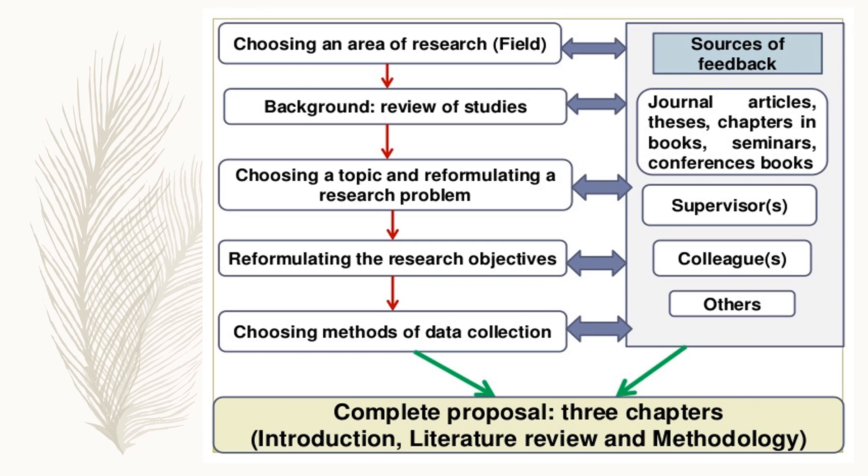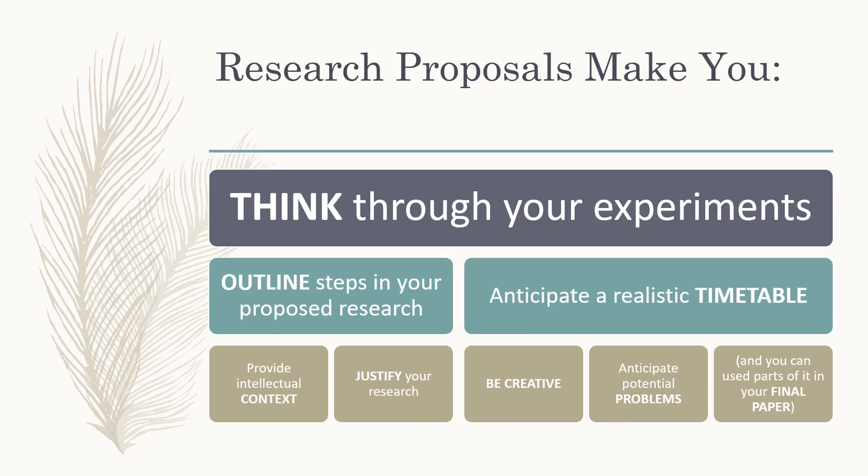Once you have chosen your topic or formulated your research problem, you can start reformulating the research objectives. Once you have listed all the objectives, you can choose the method of data collection. A research proposal makes you think through your experiment. It also helps you outline steps in your proposed research, anticipate a realistic timetable, provide intellectual context, and justify your research. It will make you more creative, and from here you can anticipate potential problems and use this as part of your final paper or thesis.